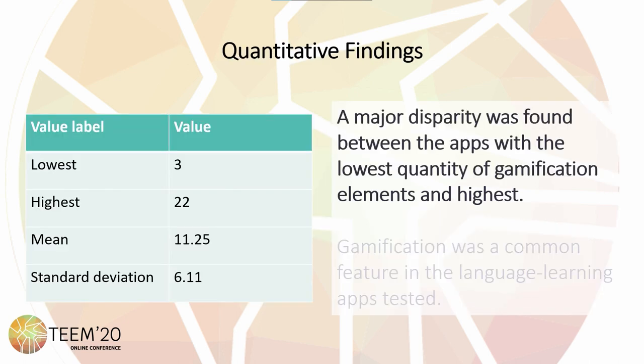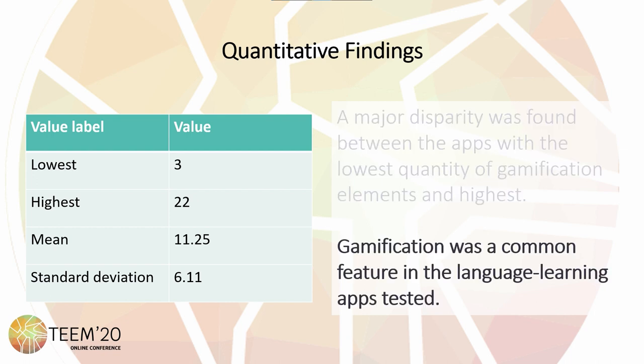From the table, it's easy to see that there is a large difference between the app with the lowest amount of gamification elements versus the highest. The standard deviation also shows the large spread of gamification implementations. And with a mean value of 11.25, it seems as though gamification is often heavily featured in the 20 language learning apps that were analyzed.